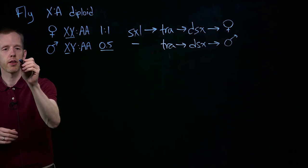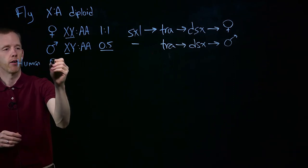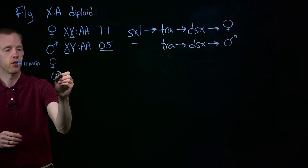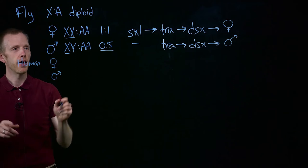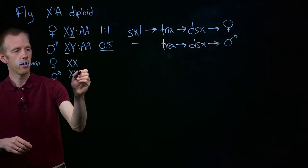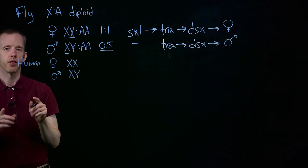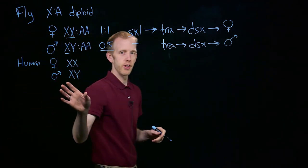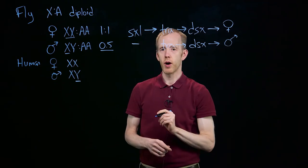Now contrast that with humans, where we have also, generally speaking, males and females. But instead, we have XX females and XY males. It's not the number of X chromosomes that causes sex determination in humans. It's the presence or absence of the Y chromosome.